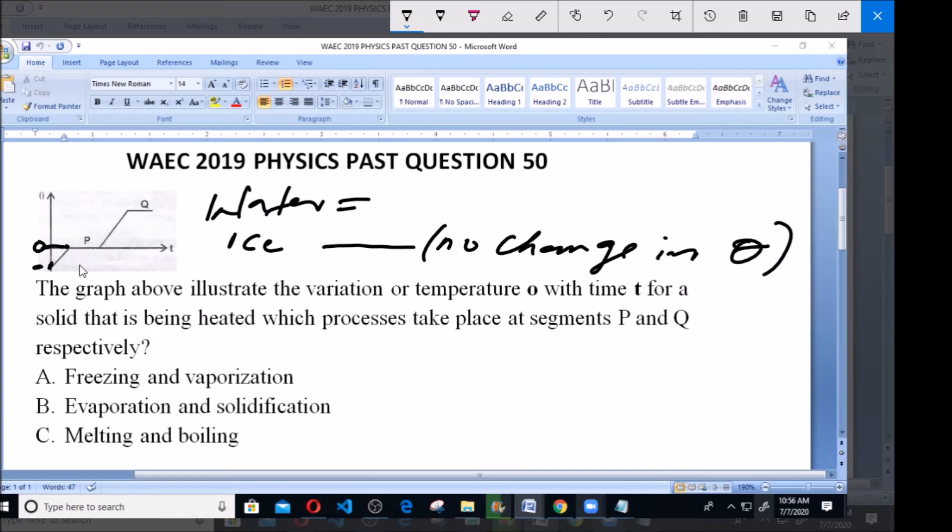Similar to the melting, the liquid is boiling. The water is changing from liquid to gaseous state. Due to the latent heat, the heat is involved in the change in state instead of a rise in temperature. That's why we have a constant value for the temperature.